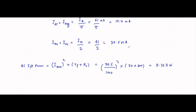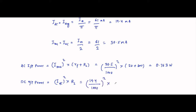The DC output power involves the average value of the current and only the load resistance: PDC = I²dc × RL. Always remember: AC input power uses RMS squared times (RF + RL), while DC power output uses Idc squared times RL only. Here, Idc = 19.4 mA = 0.0194 A, so PDC = (0.0194)² × 800 ≈ 0.301 watts.